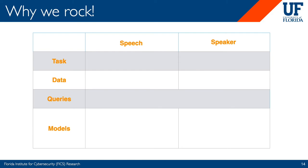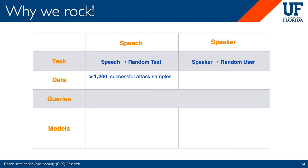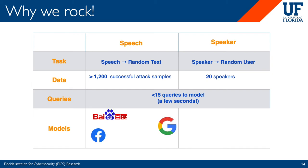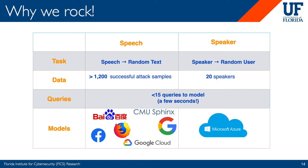Our attack can force speech recognition models to output random text and speaker recognition models to output random users. Overall, the attack takes fewer than 15 queries to the model to generate an adversarial sample, primarily because of the binary search approach we employ. Because it takes so little time to craft adversarial samples, we were able to successfully exploit models from Google, Facebook, and many others. By attacking the feature extraction stage of the speech recognition pipeline instead of the model itself, we can successfully exploit any black box voice system.